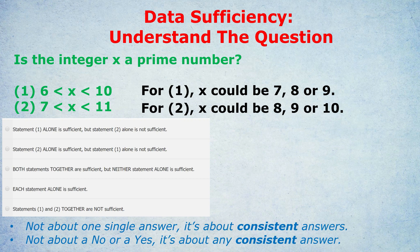If all three answers were prime, 3, 5, and 7, then it would be sufficient. It's all about consistent answers. That's what leads to a statement being sufficient. Let's look at statement 2. x is between 7 and 11, not including 7 or 11 because of the inequality sign. And we know it's an integer. What do you think about that statement?